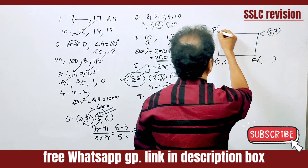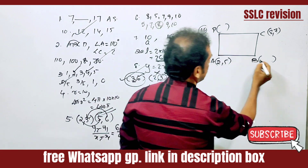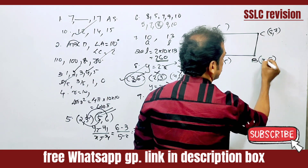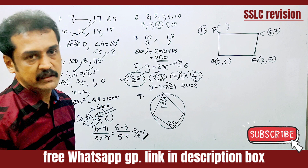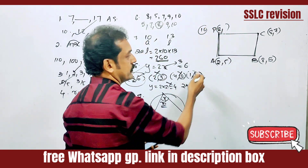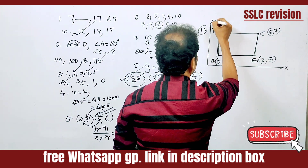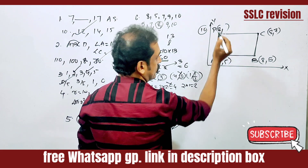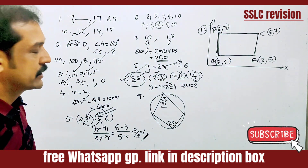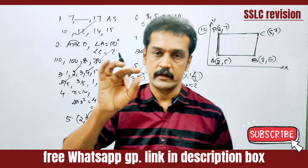We have two opposite vertices of a rectangle. The x-coordinate will be 2 and the y-coordinate will be 5. The x-axis and y-axis values give us the coordinates. This is a rectangle with opposite vertices — this is one pair with the vertex.